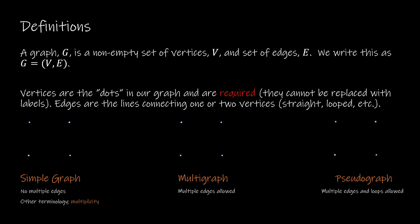Whenever we start to learn something new, it's important to understand the definitions and terminology. A graph G is a non-empty set of vertices V and a set of edges E, written as G equals V comma E. Vertices must be non-empty, meaning you need at least one vertex. A vertex is just the dot. These should be labeled A, B, C, D.